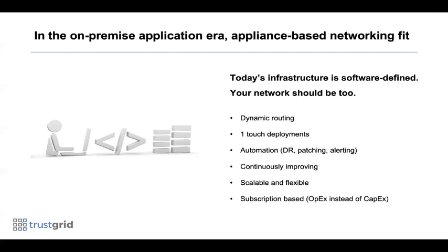Software-defined solutions are continuously improving. We're no longer writing code to chips and packaging them in appliances. There are very few dependencies between the hardware and the software running on top of it. TrustGrid supports x86 and has ARM architecture support in development, allowing dramatic improvements on innovation — continuously improving source code with new features, bug fixes, and defect resolutions. This is highly scalable and flexible by the very nature of software, enabling new performance enhancements across the entire network in real time. The business model also converts from CAPEX to OPEX, with scalability to turn services up or down in direct correlation with expense.